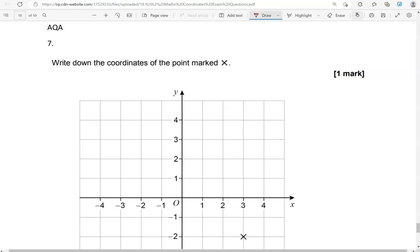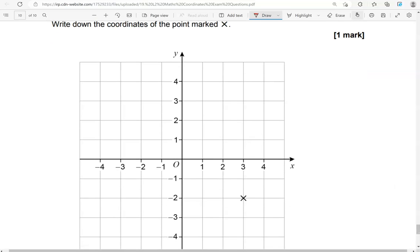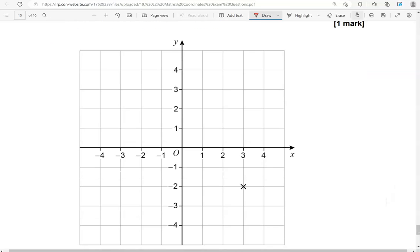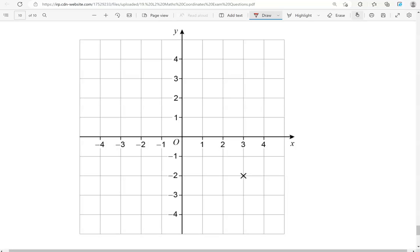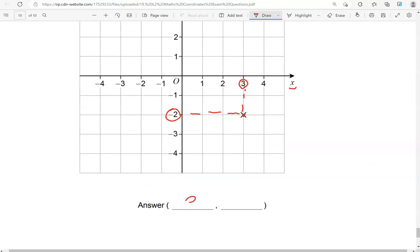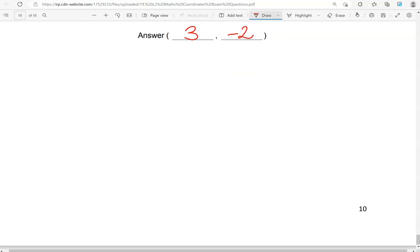Write down the coordinates of the point marked with x or across. So that's the point here. Starting with the x-axis, that's three first, then we have minus two or negative two. And that's the end of the questions.